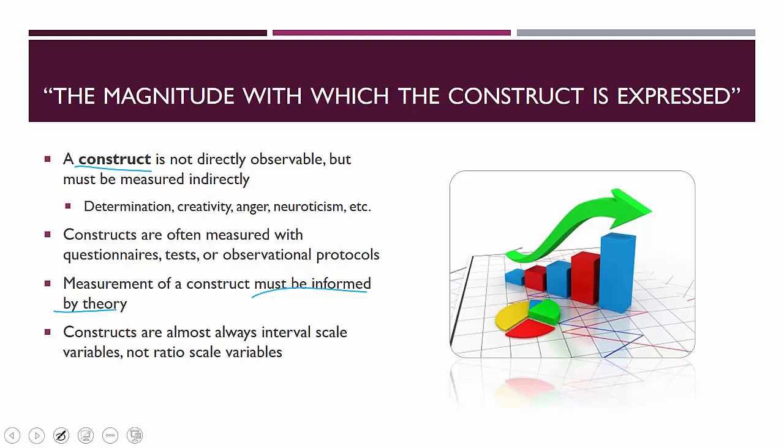Constructs are almost always measured at an interval scale. It does not make sense to talk about zero determination — if you genuinely have zero determination, does that mean you don't do anything at all? You're not motivated to beat your heart or breathe? It's a very abstract sort of thing. It makes sense to sell zero cars; it's different to say you have zero determination — it's more of a hyperbole than a reality. So constructs are measured at an interval scale.